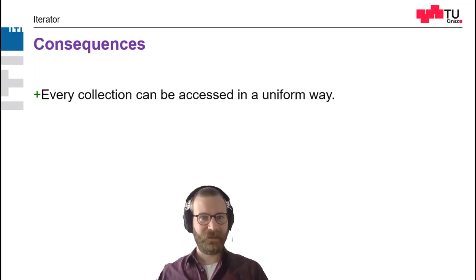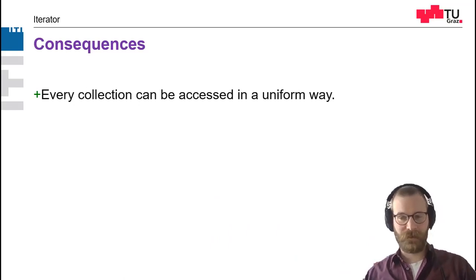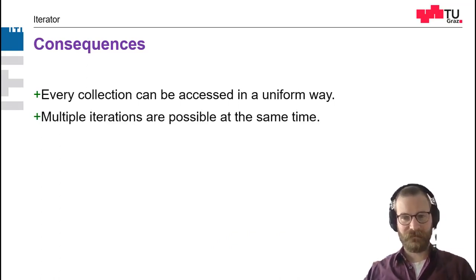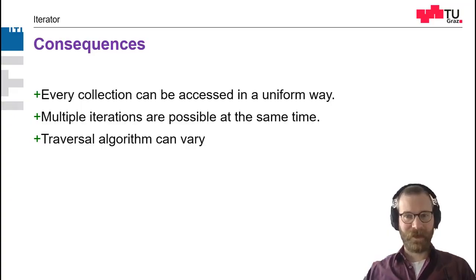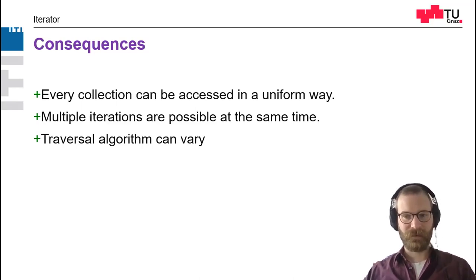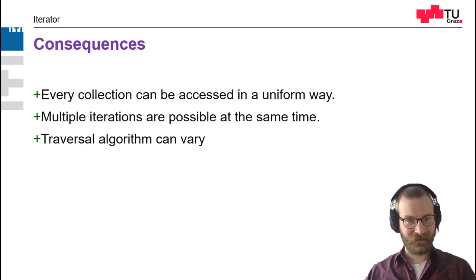But first let us talk about the consequences. By using iterator, every collection can be accessed in a uniform way — we have our next and our is done method. Furthermore, multiple iterations are possible; we can start multiple iterators and use them simultaneously. The traversal algorithm can vary — we can use different iterators, for example a reverse iterator, a normal one, or an every-second iterator. And we can decide this at runtime.